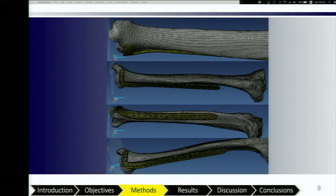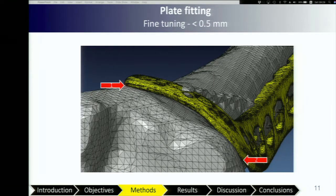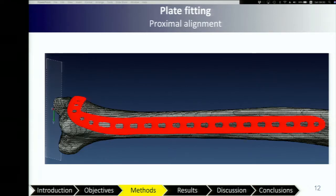The pre-contour plate was aligned in a virtual environment using VC software version 17. All cases must meet the criteria of the plate fitting method before proceeding to the next step. The first step is initial distal alignment: the distal end of the plate must be 10 mm above and parallel to the joint line, and screws must not penetrate the articular surface. In the second step, the plate is aligned so that the distance between the anterior cortex and the bone distal end is less than 0.5 mm. The final step is proximal alignment, where the end of the plate is aligned with the midline of the tibia.